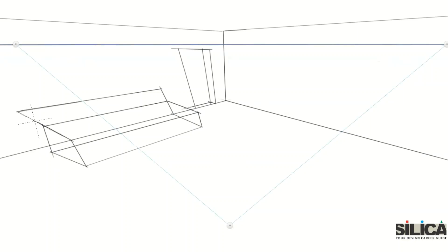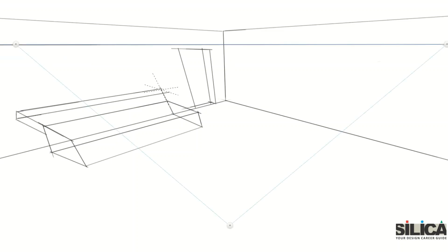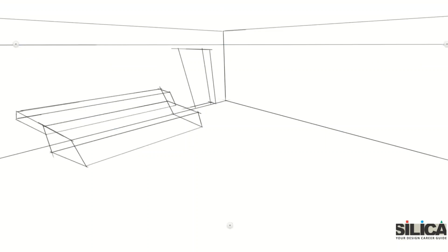Similarly draw on the other side. Now you can see the cuboid is created. I'm drawing the three-dimensional form of the backrest. Another cuboid of the backrest is done. Remove the internal lines to avoid confusion.